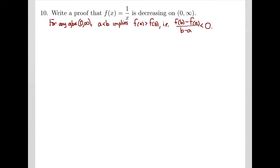The definition of a function decreasing on the interval 0 to infinity says: if you take any two numbers a and b in this set — remember the element symbol stands for 'is in' — for any two numbers a and b in this positive interval set, if a is less than b, that needs to guarantee that f of a is greater than f of b. In other words, the function is going down.